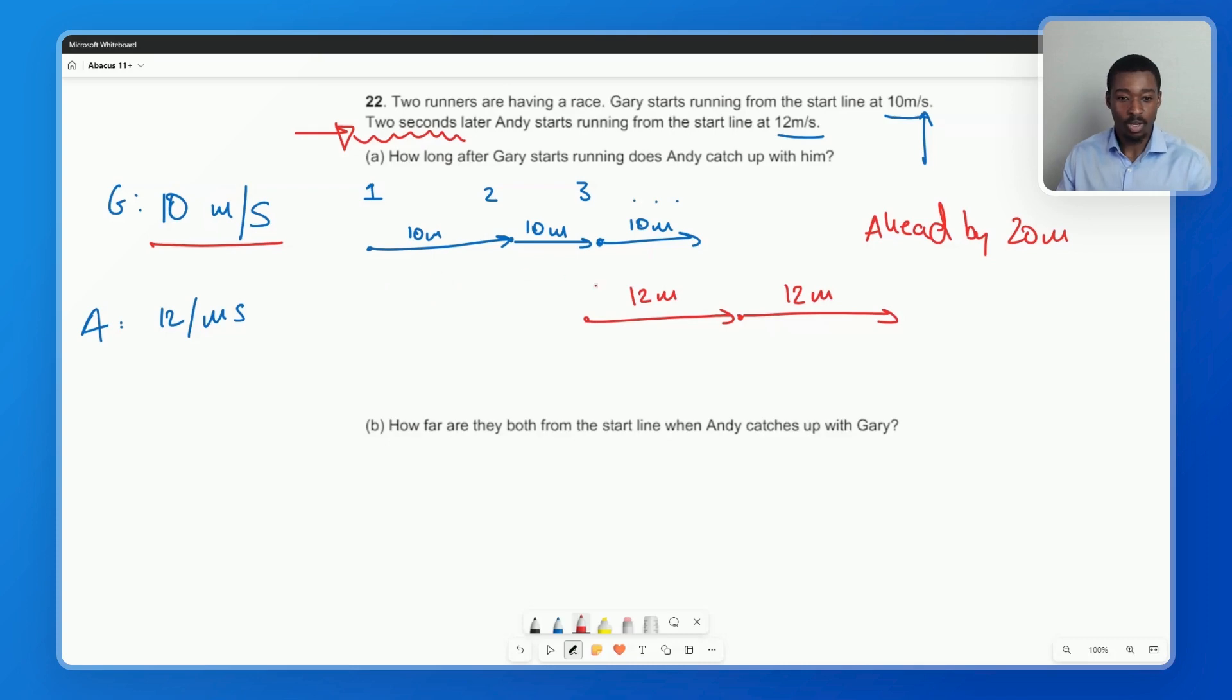What's the second thing we know? We know that compared to Gary, Andy is running two meters more every single second. Gary's running 10 meters in that same second, Andy's running 12 meters. So every second he's running two meters more. So effectively we can work out this question by thinking about how long it will take Andy to make up that 20 meter gap. And of course, if he's running two extra meters every second, it would take him 10 seconds to make up that 20 meter gap. 10 seconds times two meters gives us that 20 meters.